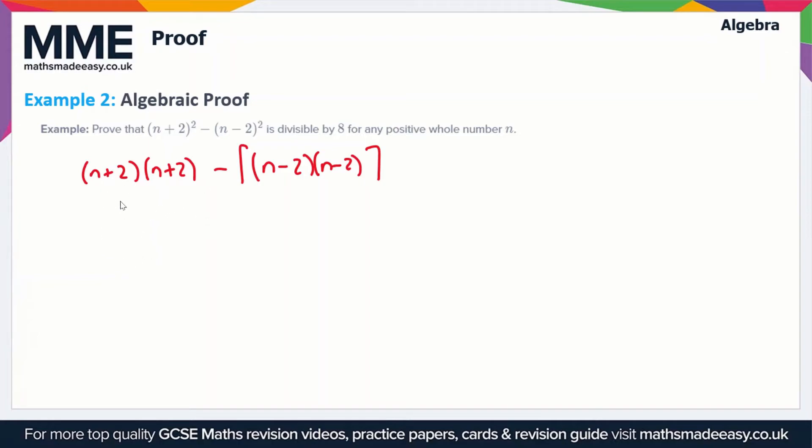Let's use the FOIL method to expand the brackets on the left first. n times n gives us n², n times +2 gives us +2n, +2 times n gives us +2n, and +2 times +2 gives us +4.